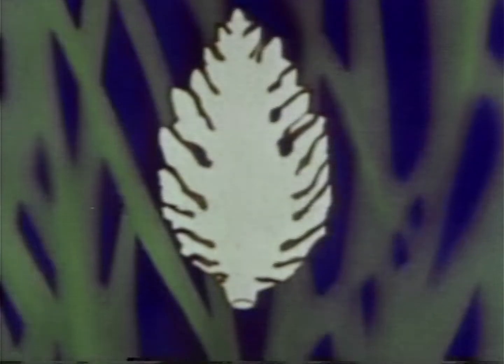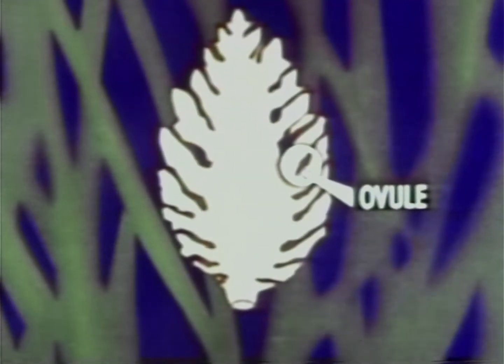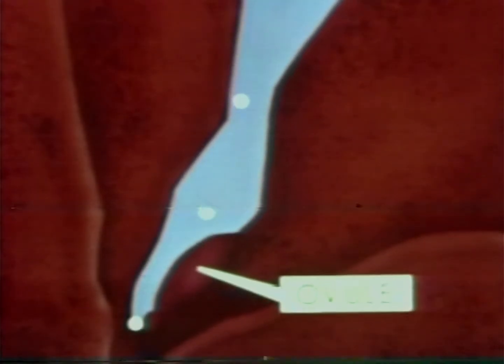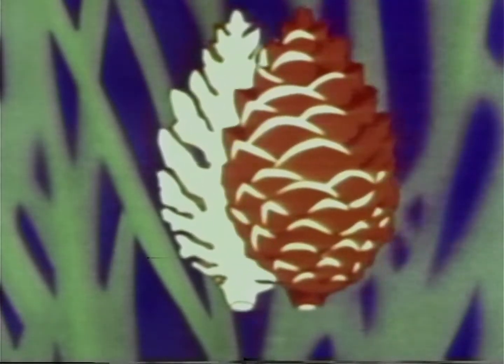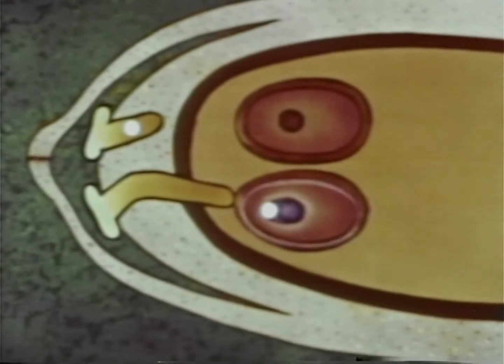The female cone, its leaves open to receive the pollen, has an ovule on the upper side of each cone leaf. Each ovule contains an egg cell ready to be fertilised by one of the pollen grains which falls onto the cone. After pollination the cone leaves are drawn together closing the cone and inside fertilisation takes place.